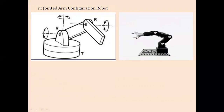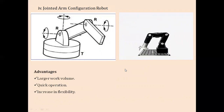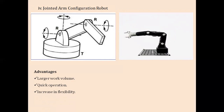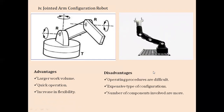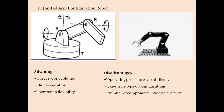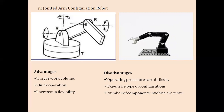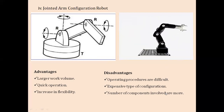The jointed arm configuration has a larger work volume, is the quickest among all configurations, and offers more flexibility. However, since it is based entirely on rotational motions with no sliding, operating procedures are more difficult compared to other types. It is also more expensive, and has more joints and components involved compared to other configurations.